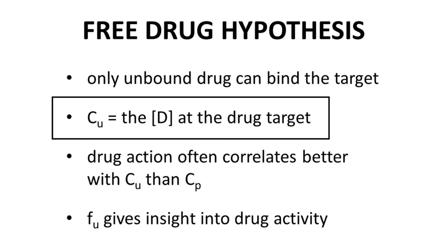There are some assumptions to the free drug hypothesis, but these assumptions generally hold true for small molecule drugs, especially oral drugs. According to the free drug hypothesis, if you are trying to understand the in vivo activity of a molecule, you will likely find that the activity correlates more with the unbound concentration rather than the total plasma concentration of bound and unbound drug. Therefore, knowing the unbound fraction can help in understanding drug activity and even in the prediction of drug dosing.